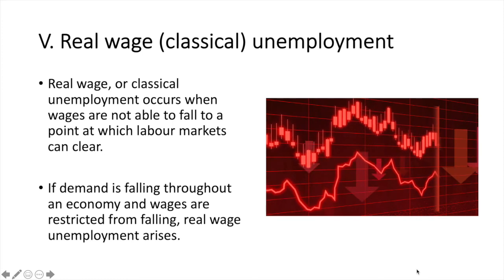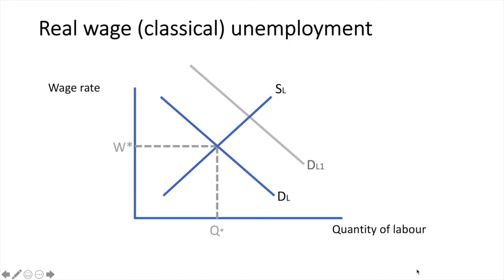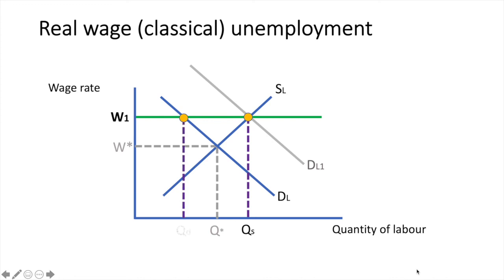Let's use the minimum wage to explain this. Suppose the labour market for factory workers is in equilibrium at W1QS, and assume that W1 happens to be the minimum wage. If demand drops further for manufactured goods, the demand for labour will fall as well. However, the wage rate cannot adjust to W star and must legally remain at W1. This will result in an excess supply of labour and thus real wage or classical unemployment.